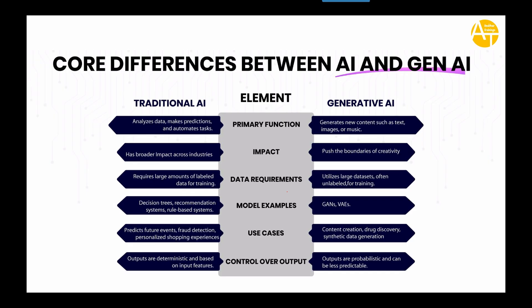Regarding data requirements: traditional AI requires large amounts of labeled data for training — labeled data being like a database table with column names and corresponding data. Whereas Generative AI utilizes large datasets that can often be unlabeled. This is what OpenAI has done — they used billions and billions of data to train and build their own models, called LLMs (Large Language Models), which now have the ability to predict and generate new content. Model examples for traditional AI include decision trees, recommendation systems, and rule-based systems, while Generative AI uses GANs and VAEs.